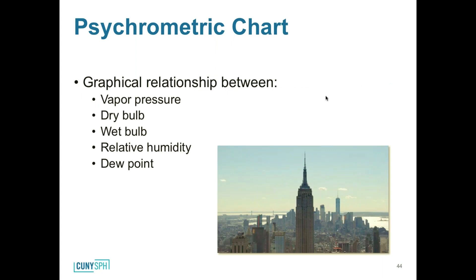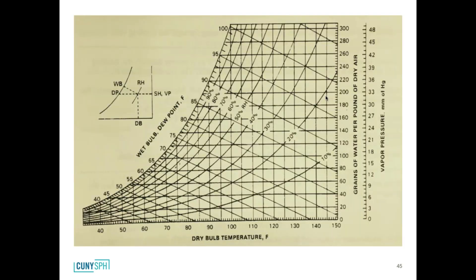Psychometric charts show the graphical relationship between five parameters: vapor pressure, dry bulb, wet bulb, relative humidity, and dew point. If you know at least two of these parameters, you can determine all of them. For example, if you have a wet bulb of 75 and a dry bulb of 110, you find where they intersect on the chart, then read off vapor pressure on the right-hand side — about 70 — and can also read relative humidity from the curved lines.